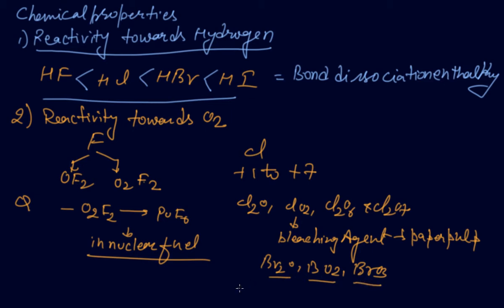Iodine forms I2O4, I2O5, and I2O7, which are insoluble solids that decompose on heating. Next, reaction with metals.